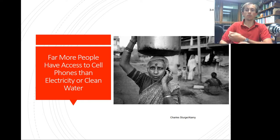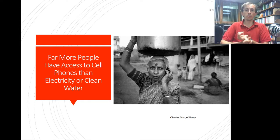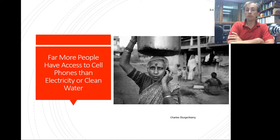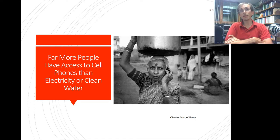Ron Paul raised four million dollars in a single day back in 2007. Rand Paul, his son, was the first presidential candidate to take Bitcoin donations — which seemed weird at the time but maybe not so much anymore.